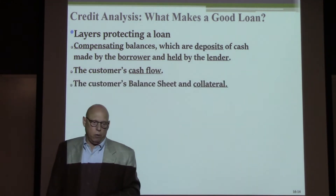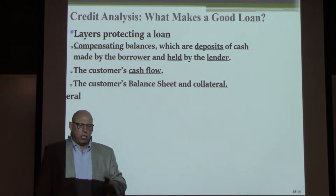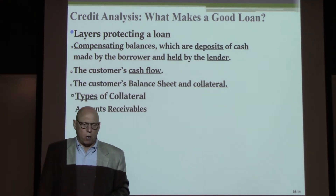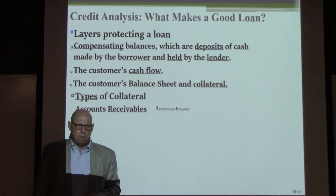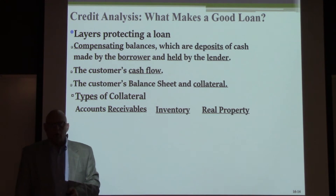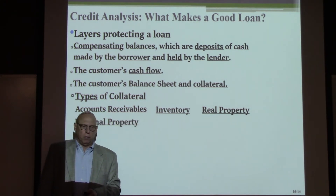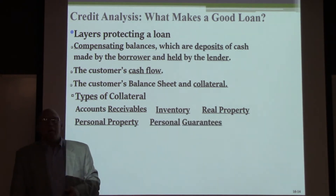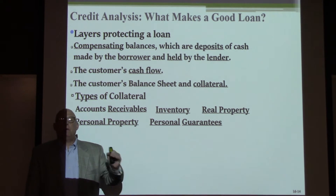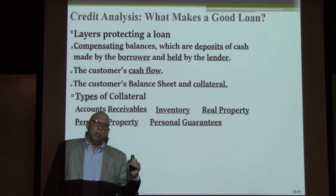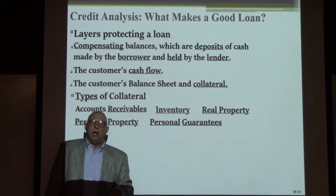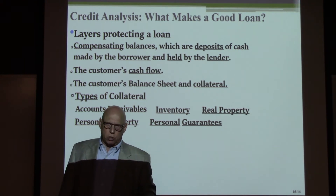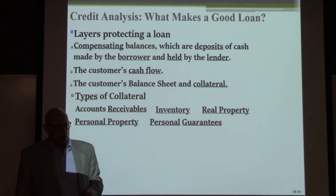Then there's the customer's cash flow, and then the customer's balance sheet and collateral. Types of collateral used frequently by borrowers: accounts receivable, inventory, real property — which is real estate, land, and building — personal property such as cars and equipment, and personal guarantees, which happen when an individual whose organization is borrowing the money says, 'I will personally put up my personal assets to back the loan.'